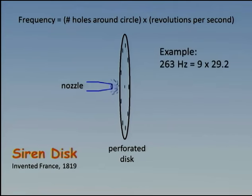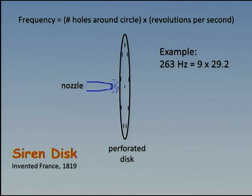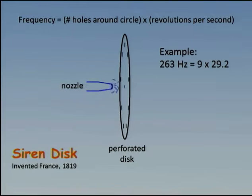As an example, if we have nine holes around our circle, as in this cartoon, and we have the disc rotating at 29.2 revolutions per second — that's about 30 revolutions per second, or about 1800 RPM — we will get a frequency of 263 hertz, which is very close to the frequency associated with middle C on a keyboard.